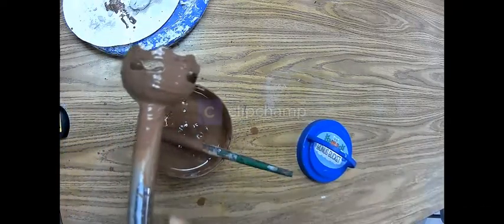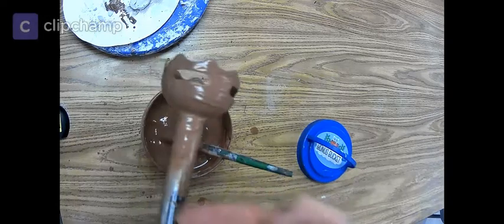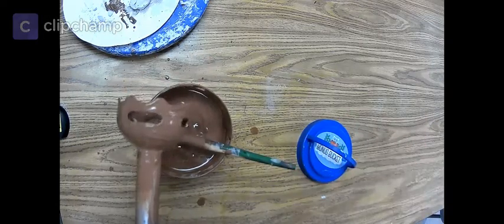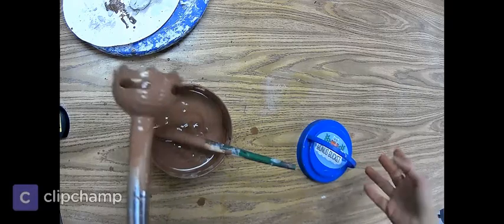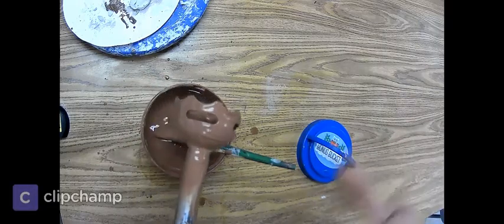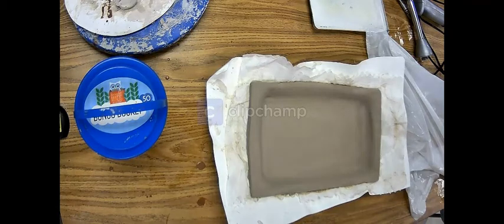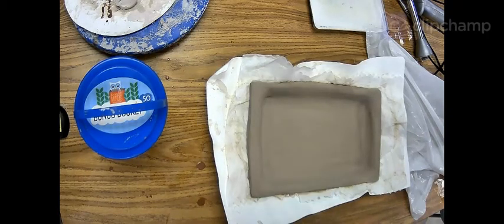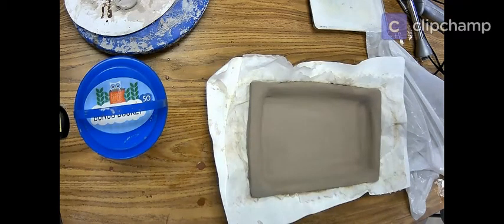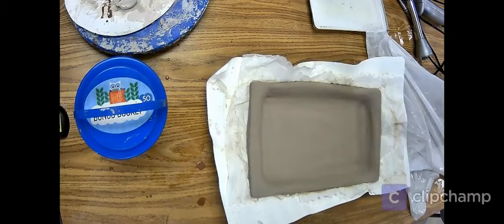I'm going to rinse off my tool because I don't want dry clay on the metal because that can be corrosive. And then I will start getting ready to do my paper resist. Alright, so here I have my slump mold, and before I dip my papers in water, I'm actually going to lay them out and kind of see where I think I want them.